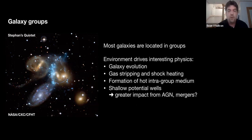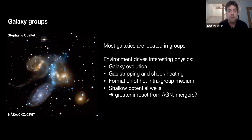Groups are also the mass scale on which we begin to build up hot gas. In individual galaxies most baryons are in the form of stars or cold gas, whereas in galaxy clusters the dominant baryonic component is a hot X-ray emitting medium filling the potential well. Groups have shallower potential wells than galaxy clusters, and that means the impact of AGN and mergers is greater in groups than in clusters.